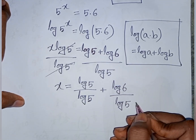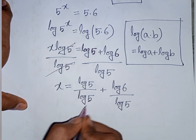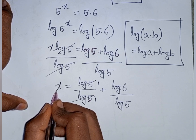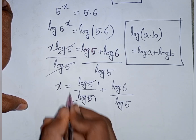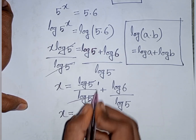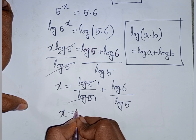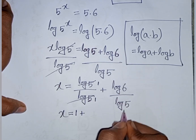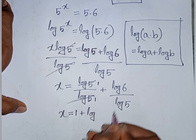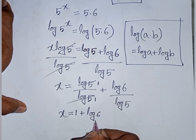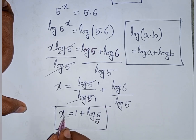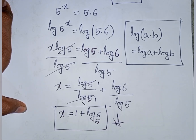Now log 5 over log 5 cancels to 1, and log 6 over log 5 equals log base 5 of 6. So x equals 1 plus log base 5 of 6. This is the value of x and our final answer.